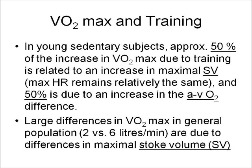VO2 max in training: in young sedentary subjects, approximately 50% of the increase in VO2 max due to training is related to an increase in maximal stroke volume, or SV — max heart rate remains relatively the same. And 50% is due to an increase in the arterial venous oxygen difference, or AVO2 difference. Large differences in VO2 max in the general population — two all the way up to six liters per minute — are due to differences in maximal stroke volume.